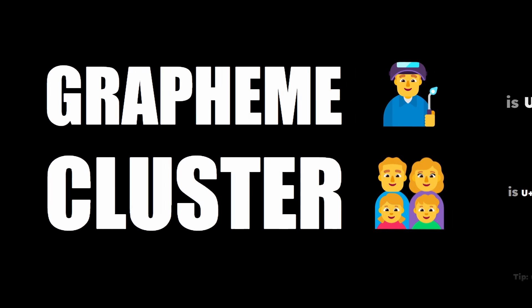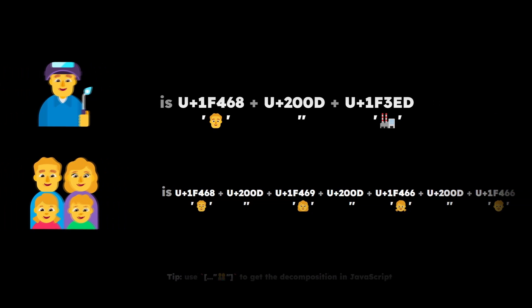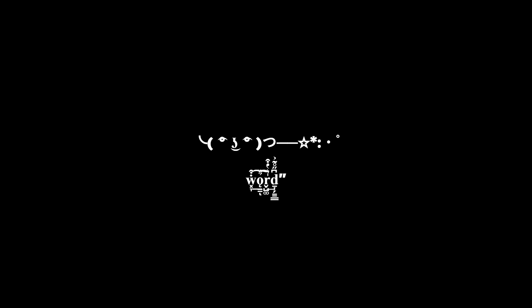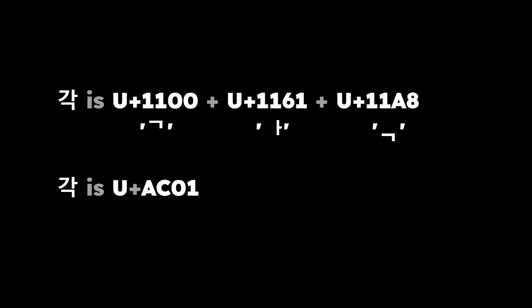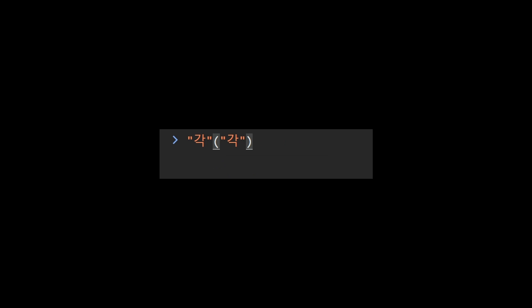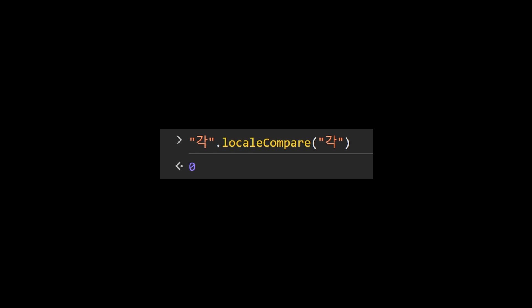One more thing to be aware of is the idea of grapheme clusters. There are certain sequences of Unicode characters that should be treated as one visual unit, meaning some visual characters can be made of several Unicode code points. This is great for making complex emoji or fancy words, but it can create problems when the same visual character can have multiple Unicode representations. For example, in JavaScript, comparing two visually identical characters using triple-equals returns false. Instead, you should use a method like localeCompare, which returns 0, meaning the two strings are equal.